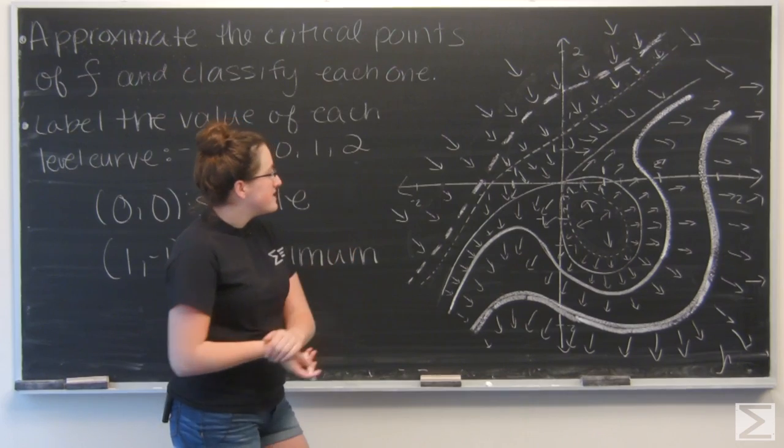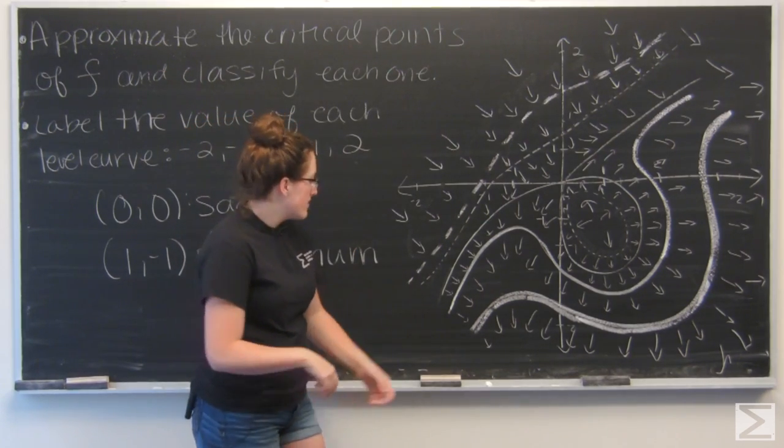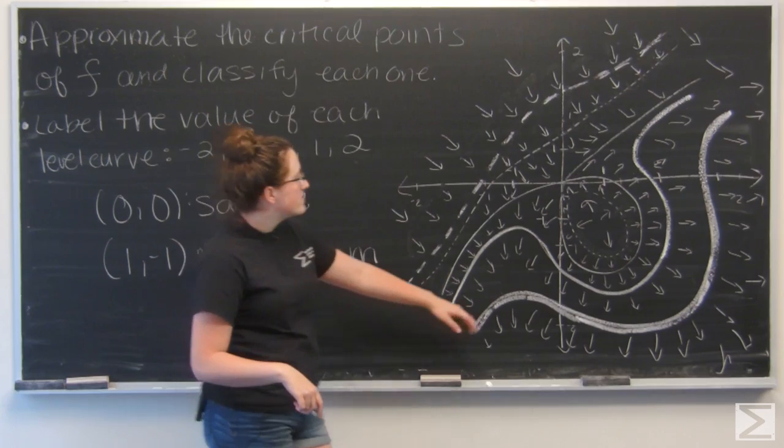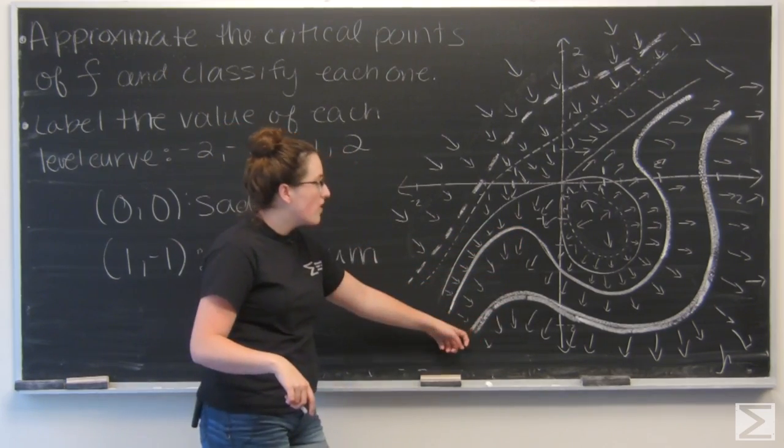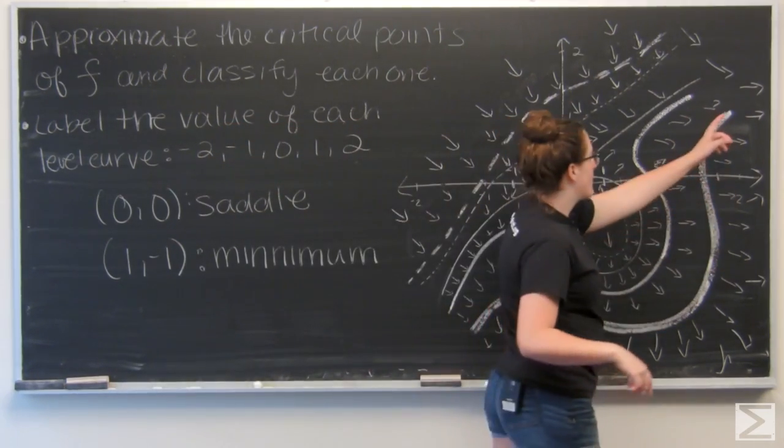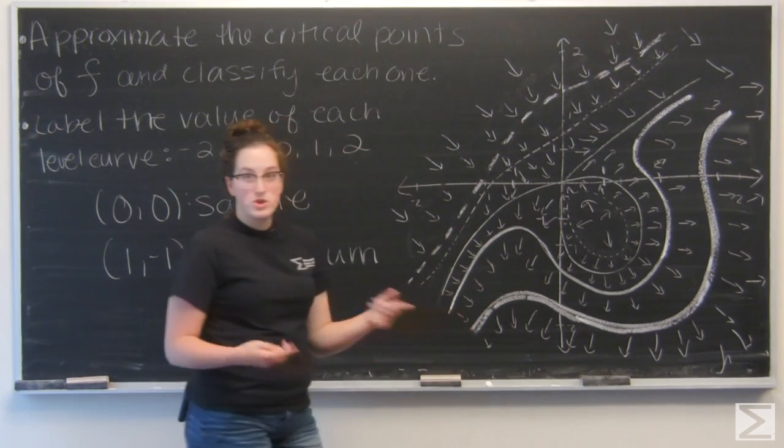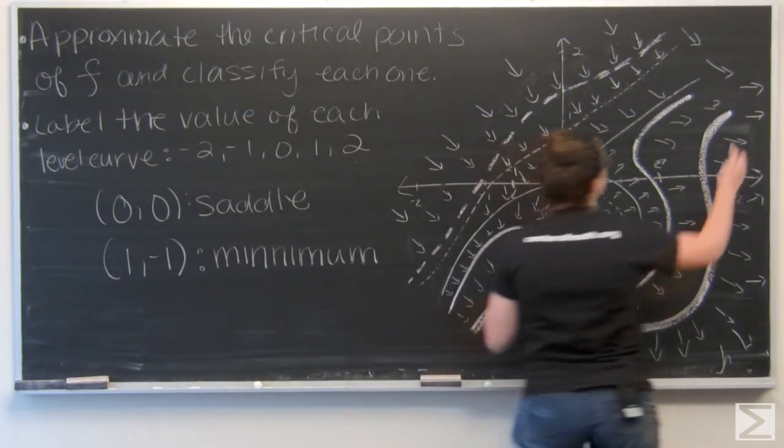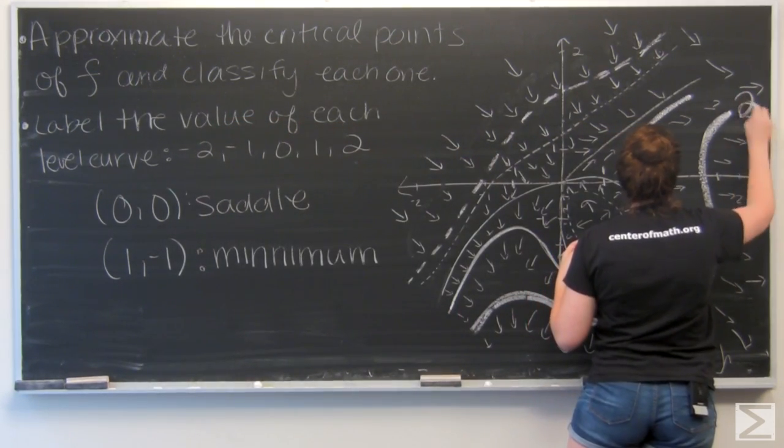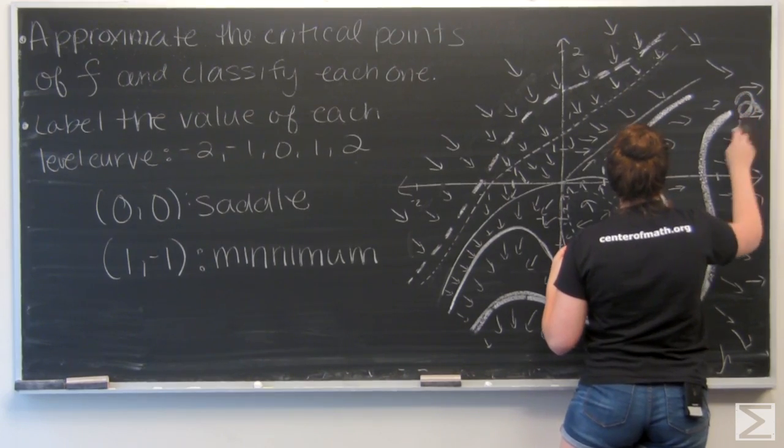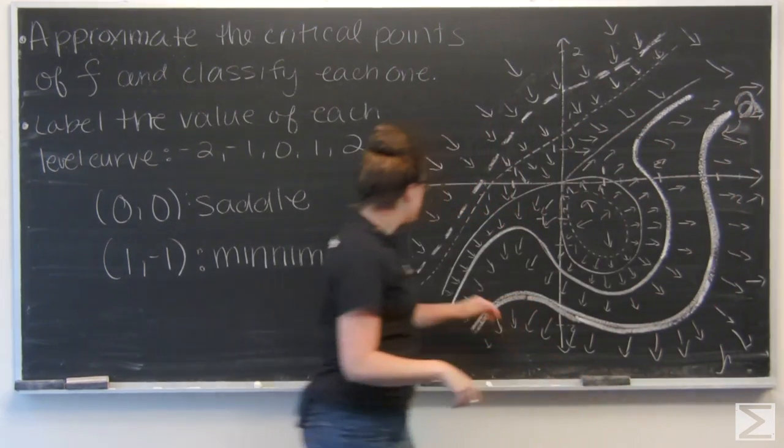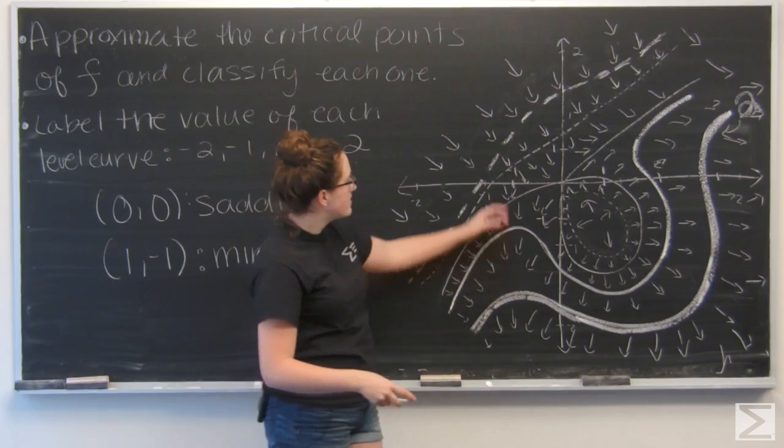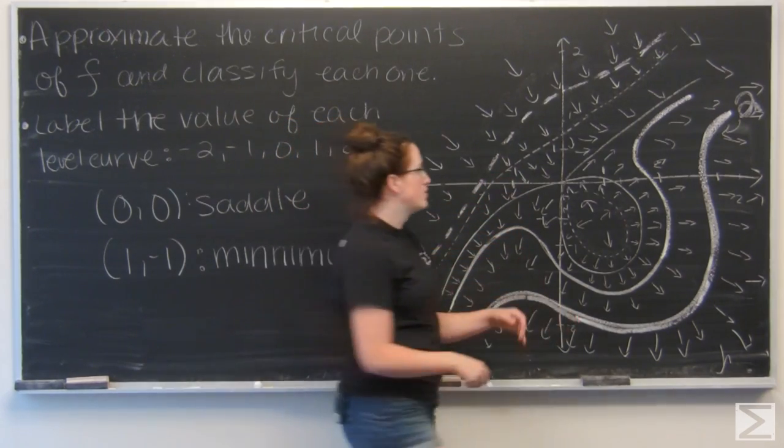So I guess the easiest one to start with is the largest level curve. And that is going to be the one farthest out. So I increase all the way to my thickest line. So I'm going to call that one 2. And then the next one, I'm going to label as 1.